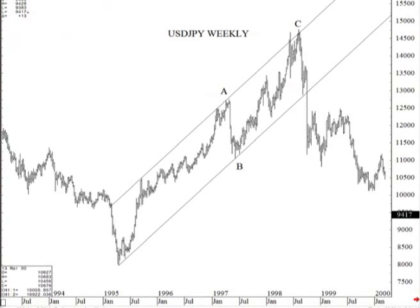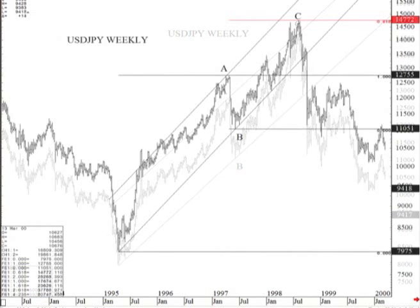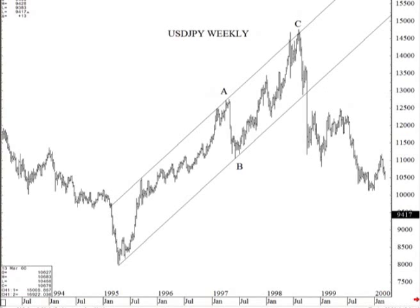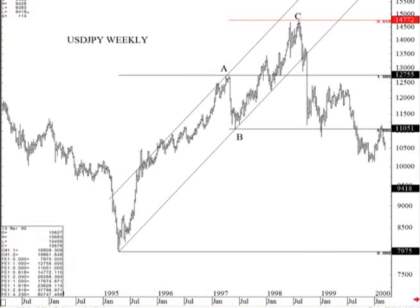The measurement is extremely important. On arithmetic scale, the channel method pinpointed the high. On log scale — percentage scale — the measuring of 61.8 pinpointed the high. You need to do both when looking at longer-term charts because sometimes it conforms to percentage movements and sometimes to pip movements. More likely than not, measurements will be better in log scale because you are measuring percentage changes. A move from 80 to 90 is much different than a move from 140 to 150.